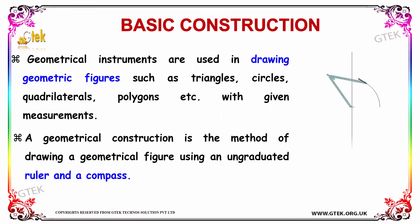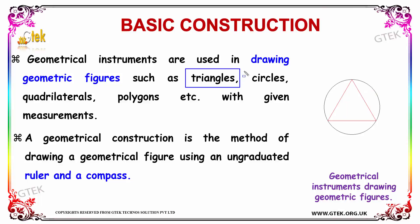If we see about basic construction, we can pinpoint the geometrical instruments which are used to draw a geometrical figure such as a triangle, a circle, or a quadrilateral. Quadrilateral is nothing but a four-sided figure, or we can say it as a polygon and so on. These kinds of geometrical figures can be drawn with the help of geometrical instruments along with its measurements.